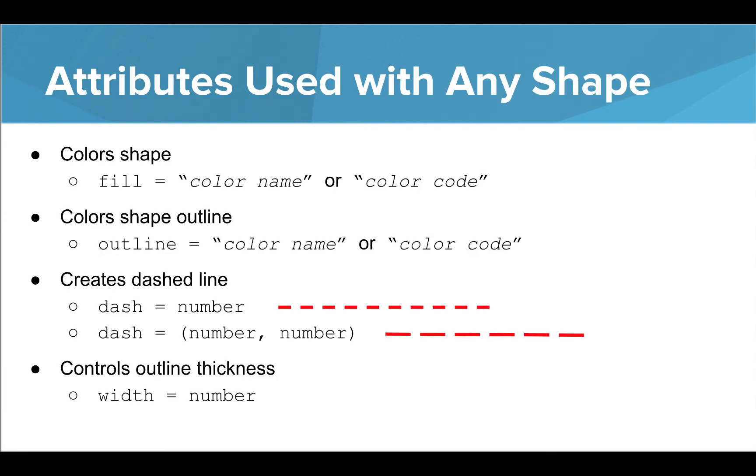There are some attributes we can use with any shape we draw. We've already seen the fill and outline attributes that will color the shape or the outline with a given color, but let's look at some more. The dash attribute will draw a line or the outline of the shape with dashes as noted by the numbers given. If one number is given, this will be the distance for each dash and space. If two numbers are given, the first number will be the length of the dash, and the second will be the length of the space. The width attribute will control the thickness of the shape's outline and can be used in conjunction with the outline attribute to give a shape a thick, colored border. Let's go to our code editor to use these functions and attributes to create some graphics.